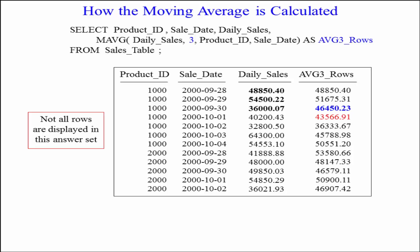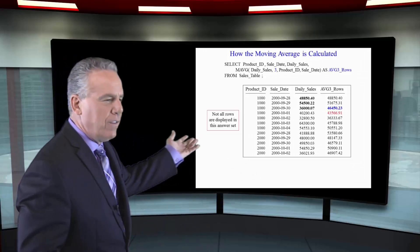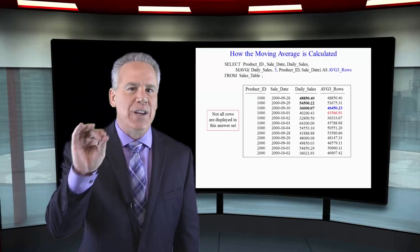Now let's look at day one. Day one we made 48,850.40. That's the average. We can't do three rows there because there's no rows in front of that. Then on day two we did 54 and it's the average of 54 and 48 that gives us the 51.